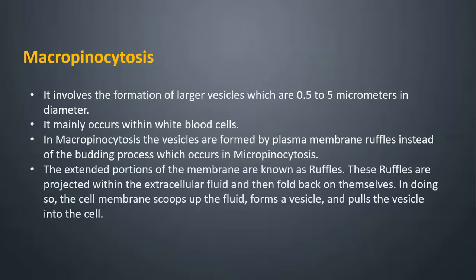In macropinocytosis, the vesicles are formed by plasma membrane ruffles instead of the budding process which occurs in micropinocytosis. The extended portions of the membrane are known as ruffles. These ruffles are projected within the extracellular fluid and then fold back on themselves. In doing so, the cell membrane scoops up the fluid and forms a vesicle, pulling it into the cell.